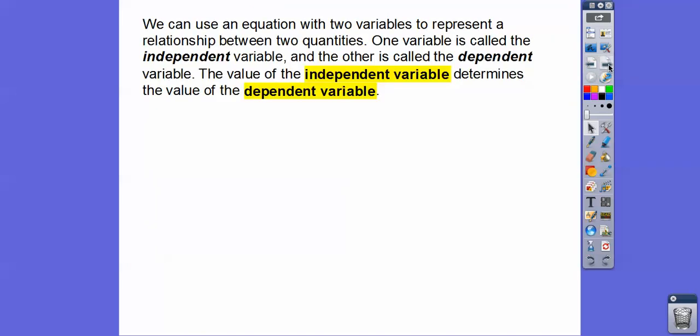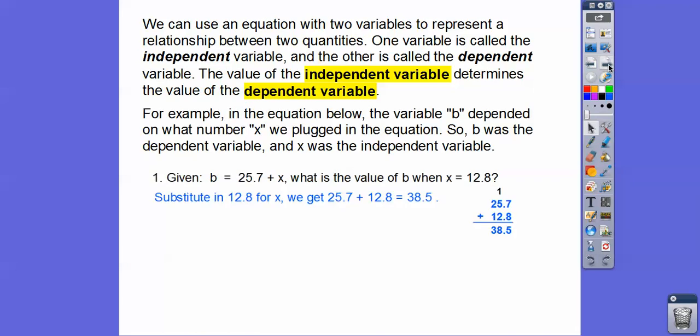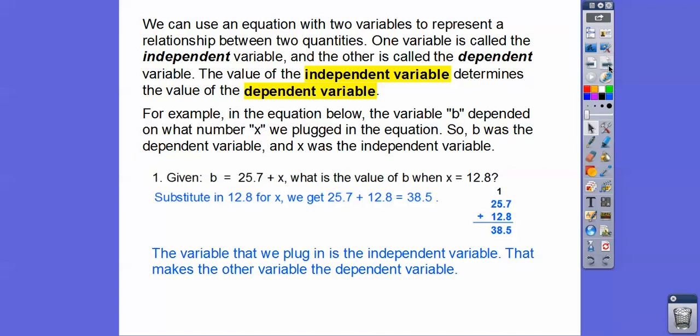When we use an equation with two variables to represent a relationship between two quantities, there's always one or two that are unknown. One variable is called the independent variable and the other is called the dependent variable. The value of the independent variable determines the value of the dependent variable. The number we plug in is our independent variable, and that makes the other variable the dependent variable.